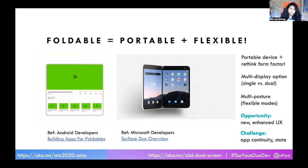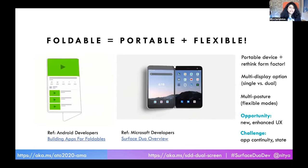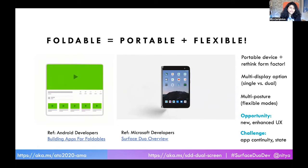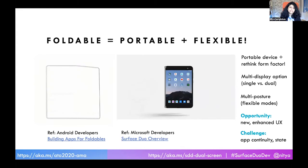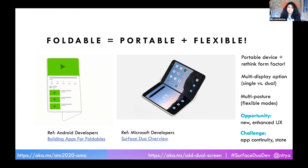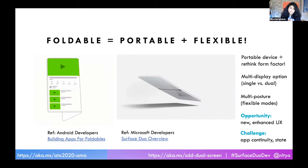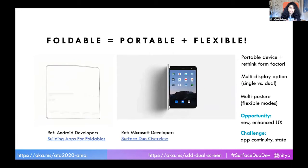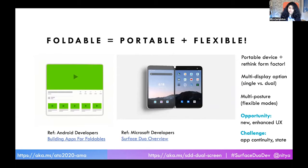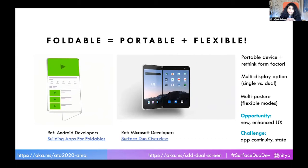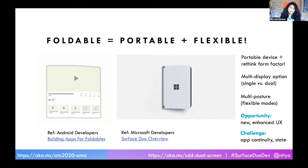The opportunity when you look at foldable is you can now rethink the user experience — what could you do if you didn't have to carry two separate devices, but one device can morph between these two modes? The challenge though is app continuity. What happens is the user expects that when they go from fold to unfold and back again, whatever they were doing should continue seamlessly. You need to reorganize content, keep state consistent, and that is hard.